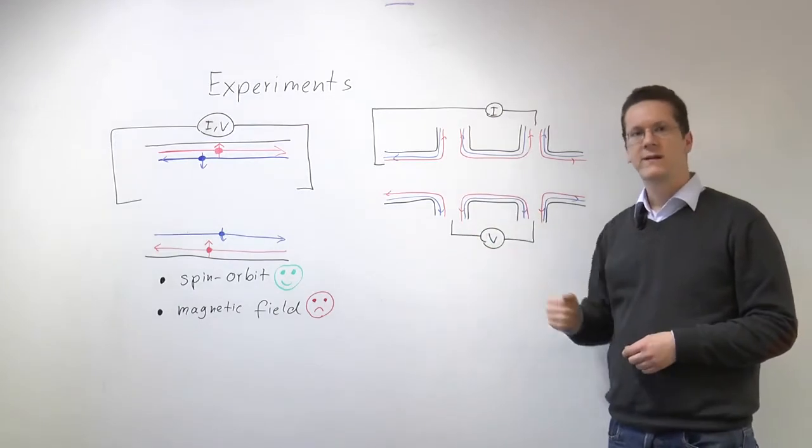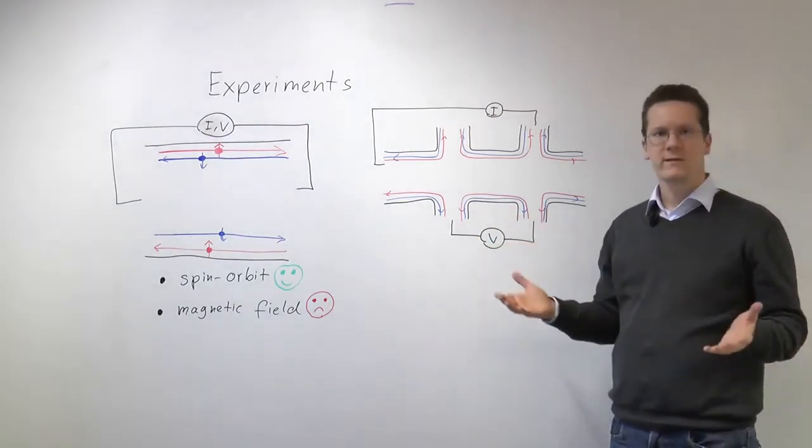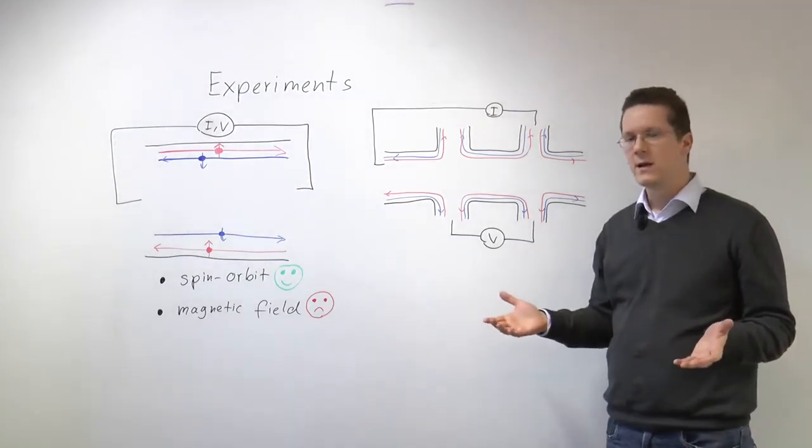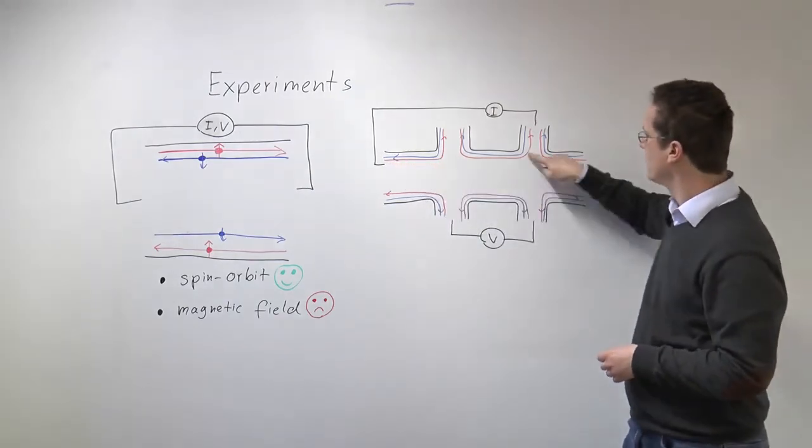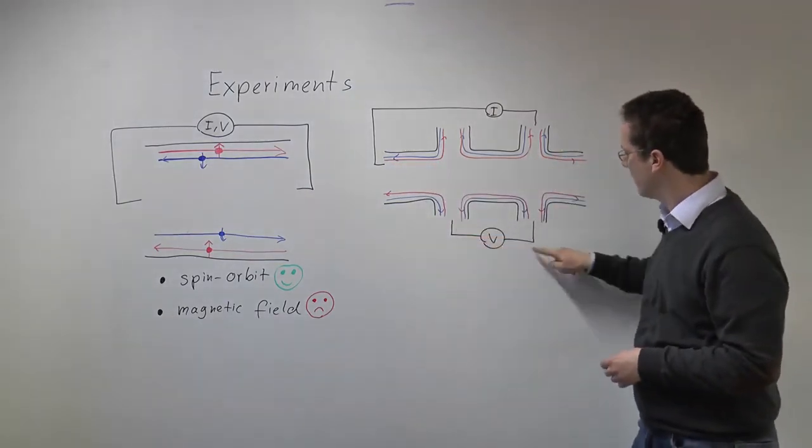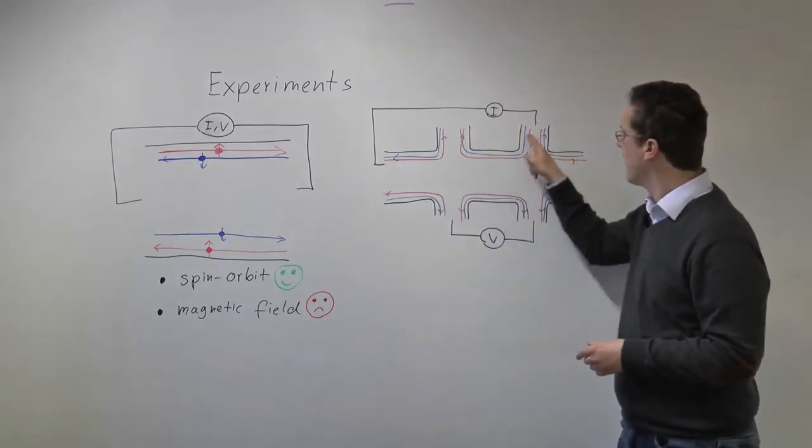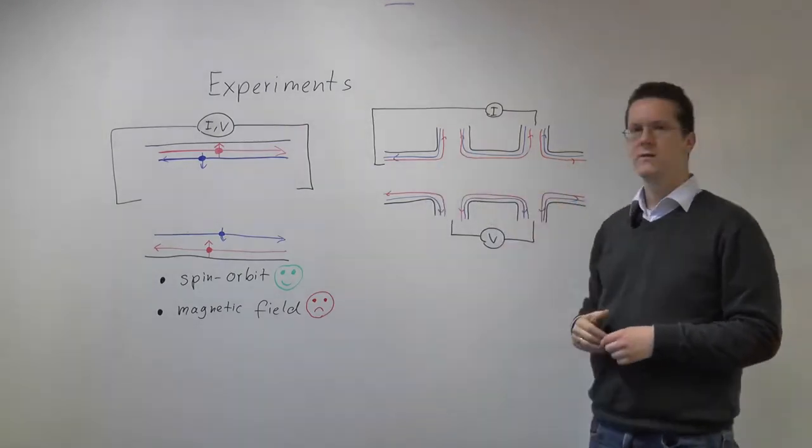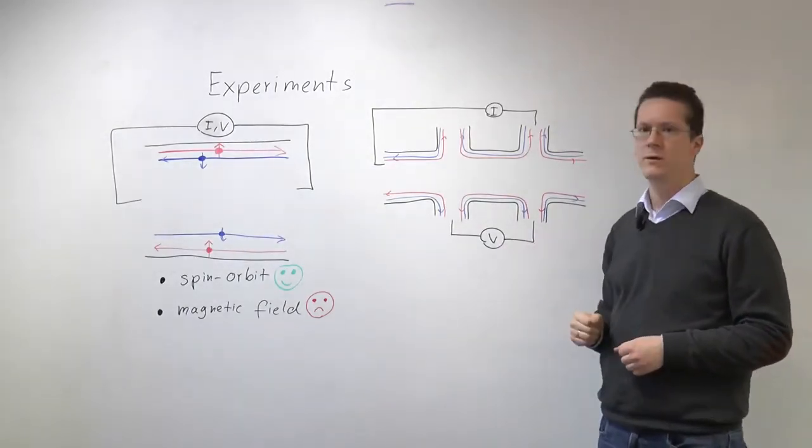Now you've already seen in the quantum Hall effect that you can measure so-called non-local resistances in a multi-terminal setup. In the quantum Hall effect this was the Hall resistance. Now in this case there is no Hall resistance because we have time-reversal symmetry but still you can measure non-local resistances by for example passing a current through these terminals here and measuring the voltage here. And since you have these reflectionless edge channels connecting all these different leads you will measure characteristic universal values of the non-local resistance.